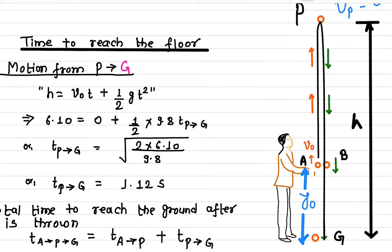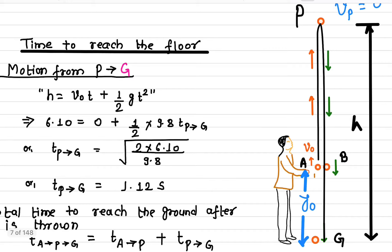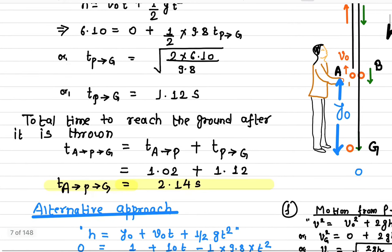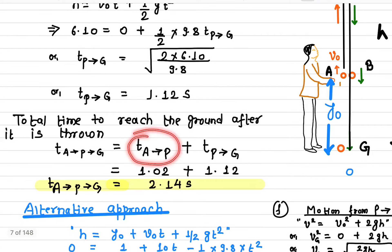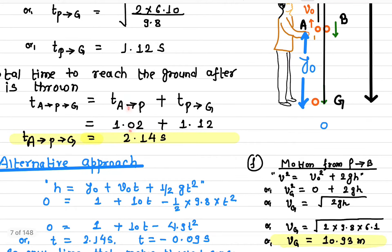The time from P to the ground is 1.12 seconds. The total time the ball remains in the air from A to ground is the time from A to P plus P to G: 1.02 + 1.12 = 2.14 seconds.